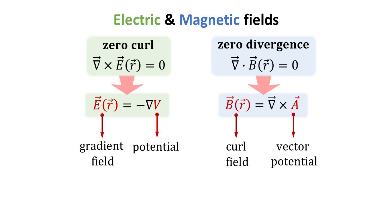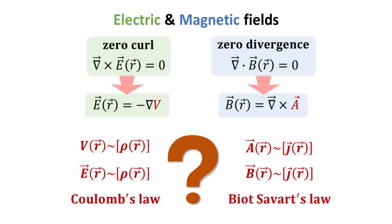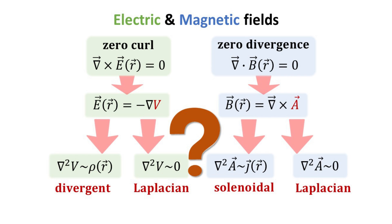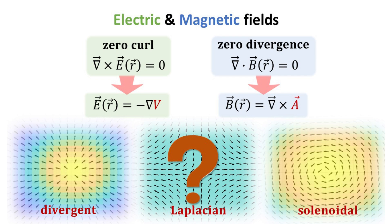The electric field, which has zero curl, can be expressed as the gradient field of a scalar field, herein denoted as the electric potential V. The magnetic field, which has zero divergence, can be expressed as the curl field of a vector field, herein denoted as the magnetic vector potential A. In this video, we shall derive the form of the electric and magnetic fields in terms of their source terms. We shall also introduce the Laplacian and Vector Laplacian, which allows a unified framework for thinking about the electric and magnetic fields in terms of their divergent, solenoidal, and Laplacian field constituents.